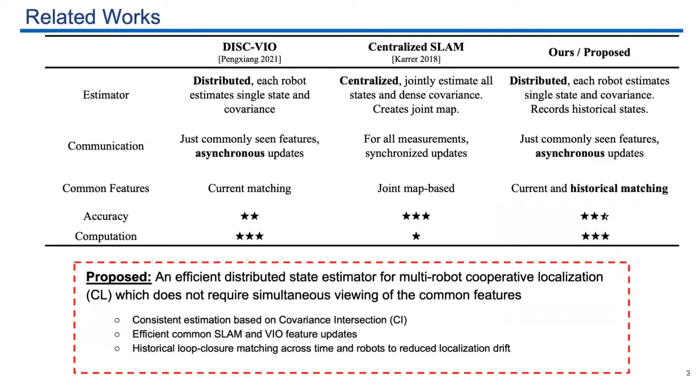We compared our proposed algorithm to some closest work. The first one is DISC-VIO. It's our previous work. It's also a distributed collaborative localization algorithm, but it only uses the current common features, which means it requires the robots observing the same common features simultaneously.